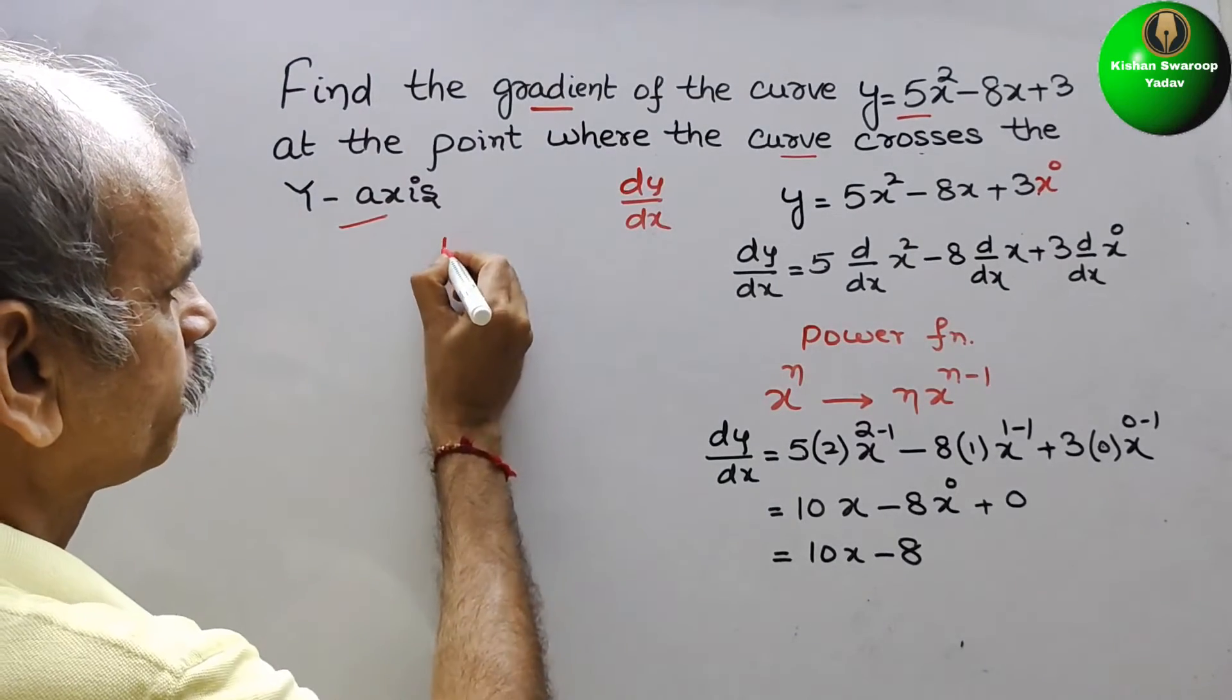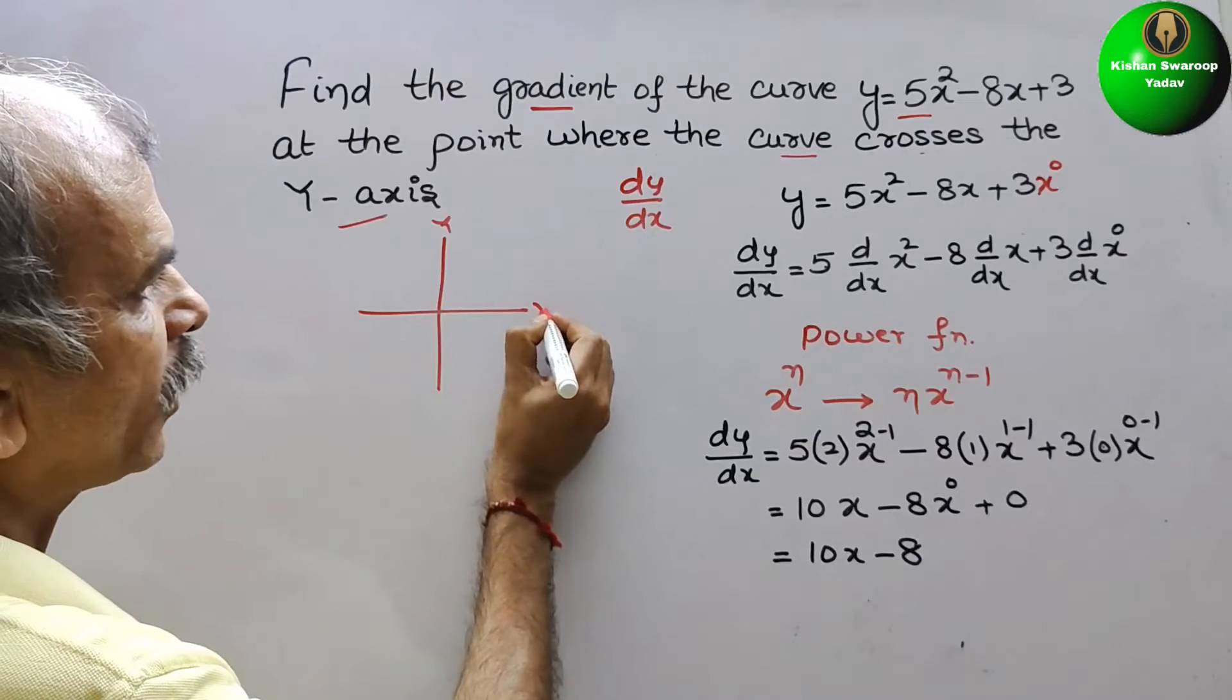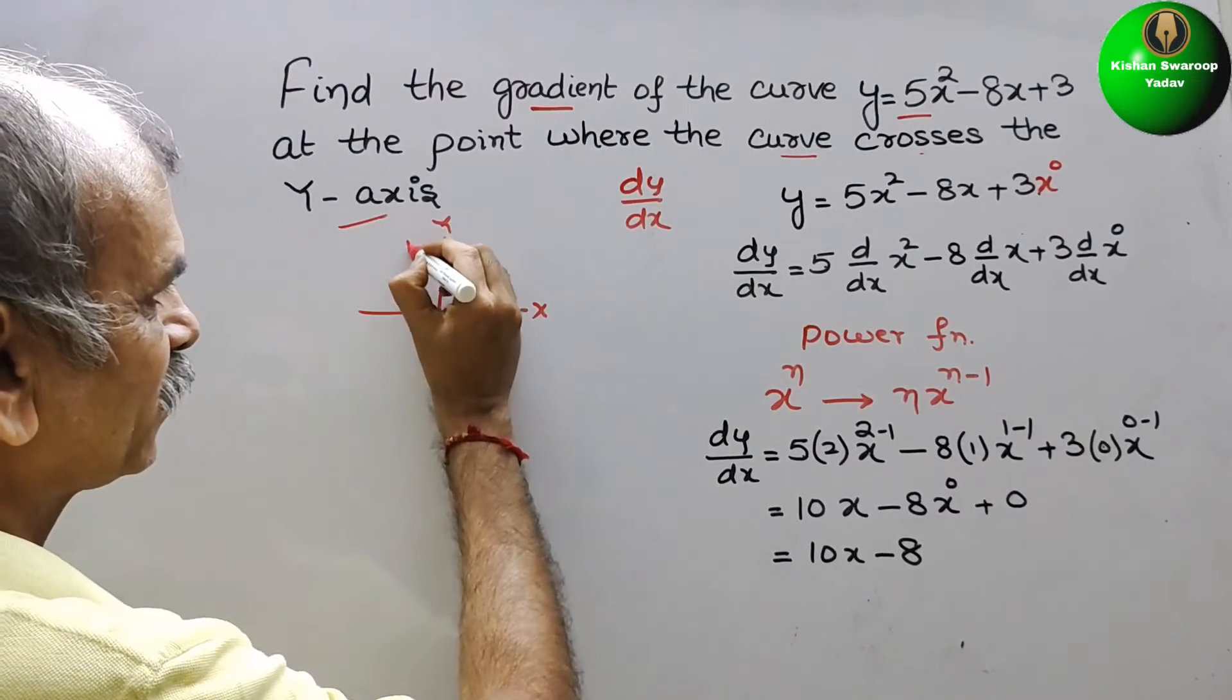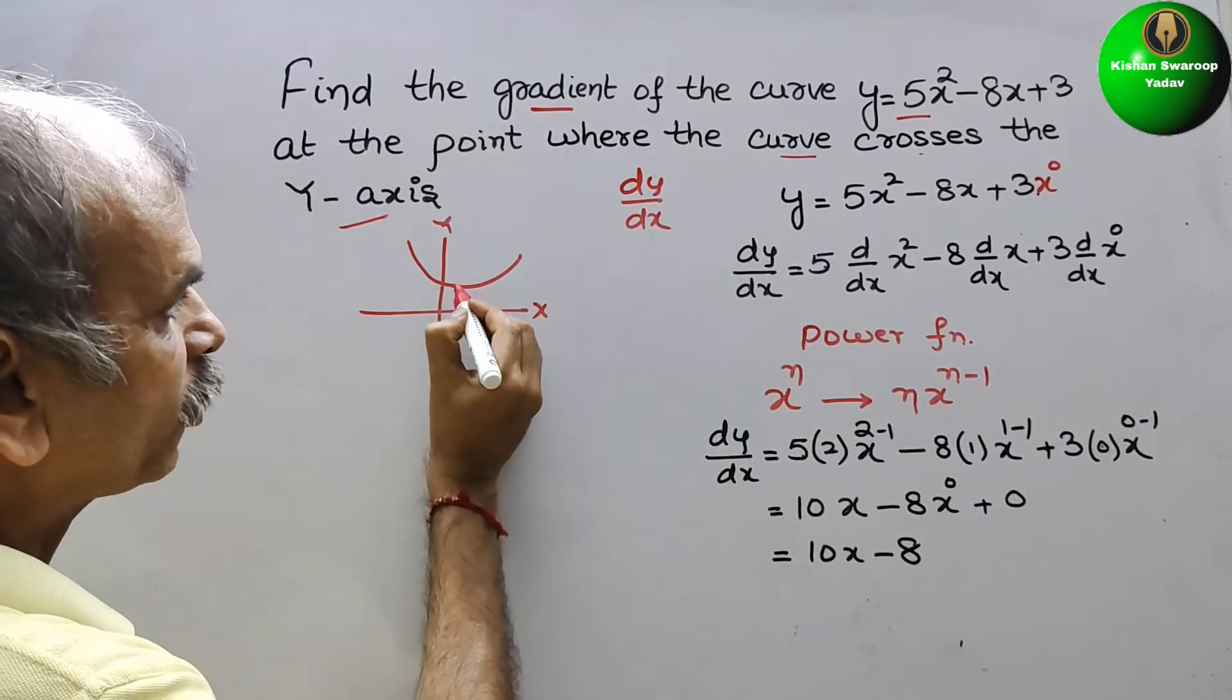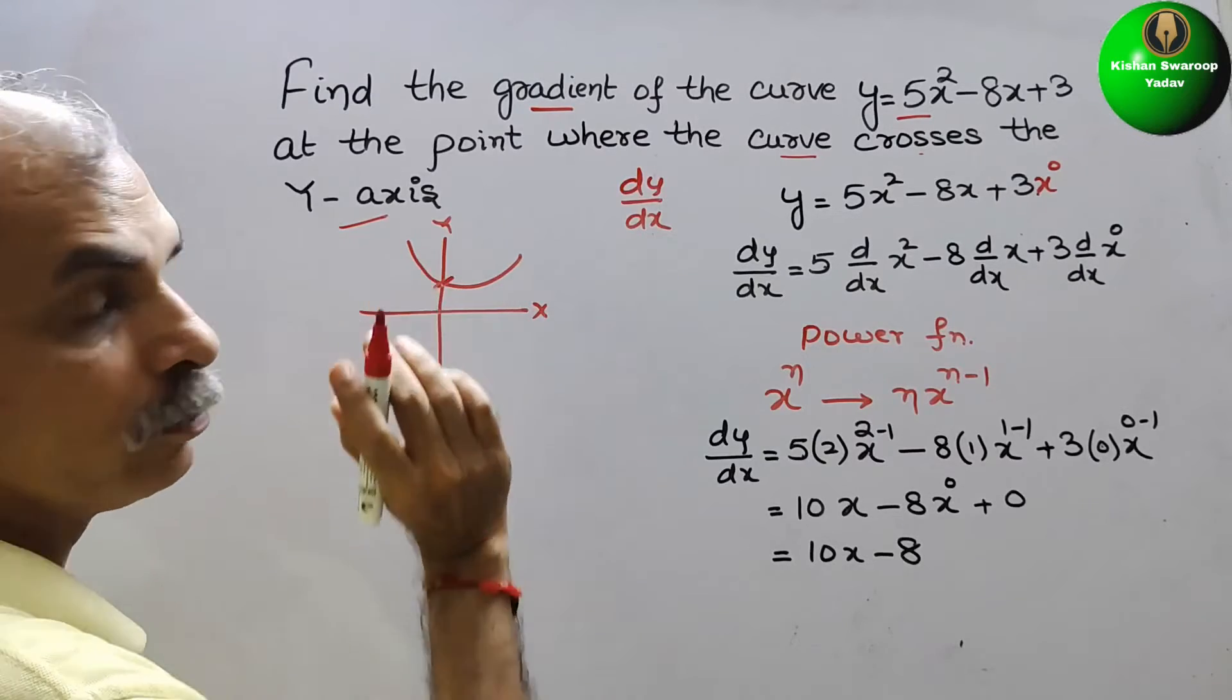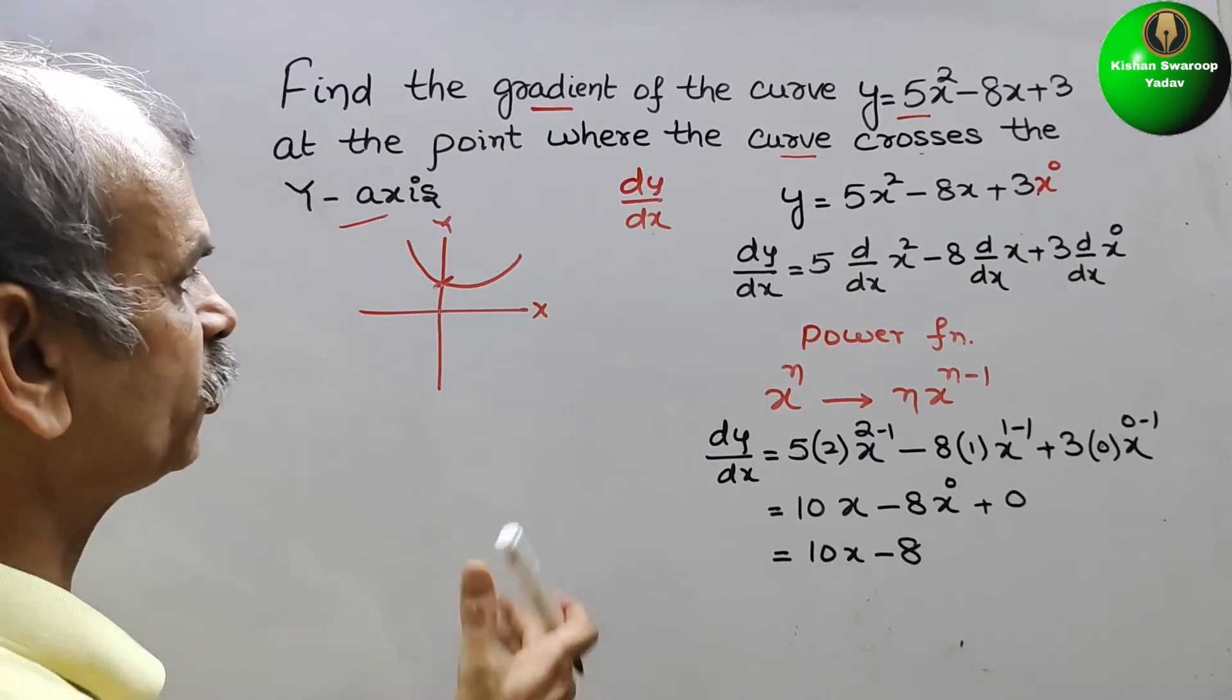If you see this, this is your y, this is your x-axis. Suppose the curve is like this, it crosses here. So you can see on y-axis, x is 0, so here x is 0.